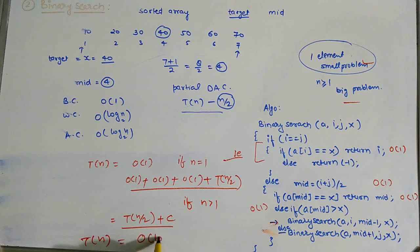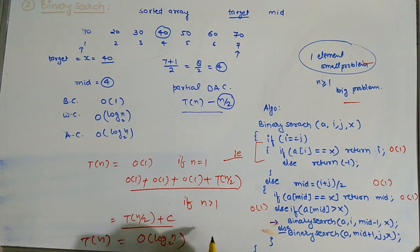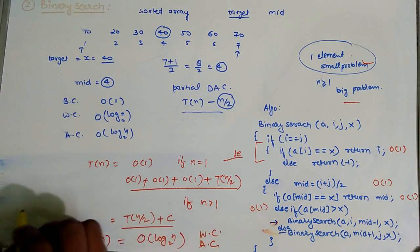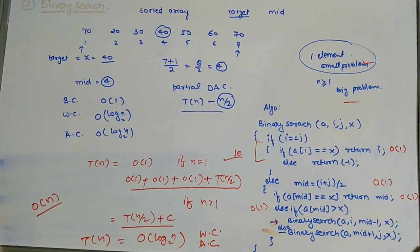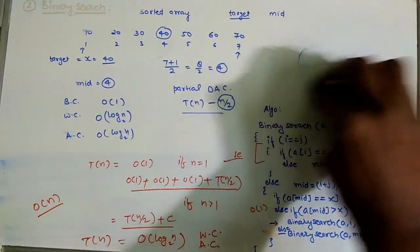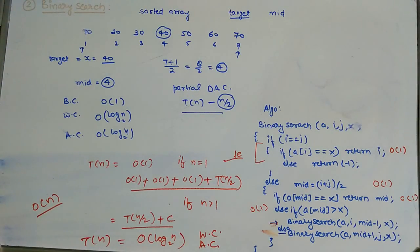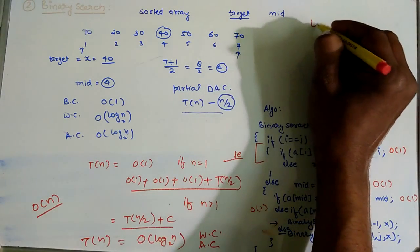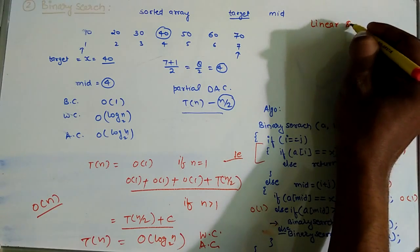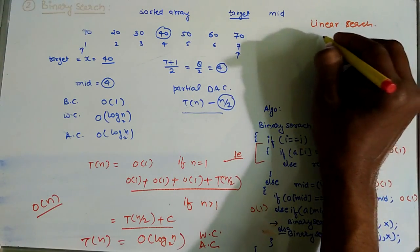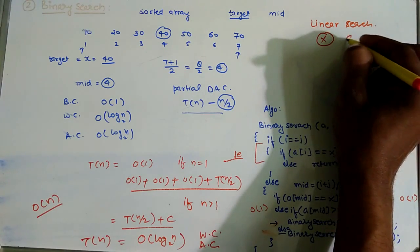The time complexity of the binary search algorithm is O(log n base 2) for worst case and average case. For best case, it requires O(1) time. Now, for linear search, since we start searching from the first index of the array, the best case occurs when the target element x is at position a[1].